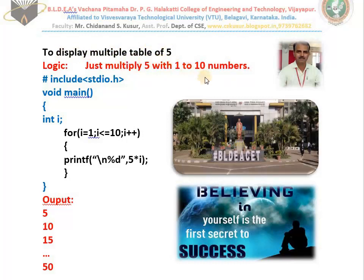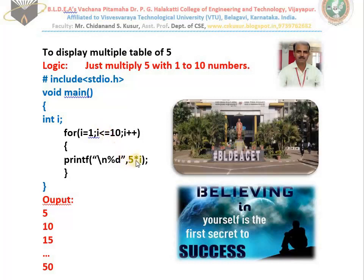I already taught you how to print 1 to 10 numbers using a for loop where i goes from 1 to 10. What I am doing here is multiplying 5 with 1 to 10 numbers. First time i is 1, 1 less than or equals to 10, so 5 into 1 equals 5. i becomes 2, 2 less than or equals to 10, so 5 into 2 equals 10. i becomes 3, 5 into 3 equals 15, and so on up to 5 into 10 equals 50. It prints the multiplication table of 5.